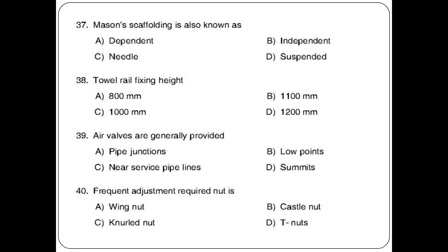Mason scaffolding is also known as — options: dependent, independent, suspended. The answer is option B: independent. Towel rail fixing height — options: 800 mm, 1100 mm. The answer is 1100 mm.